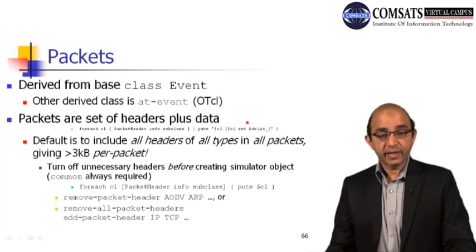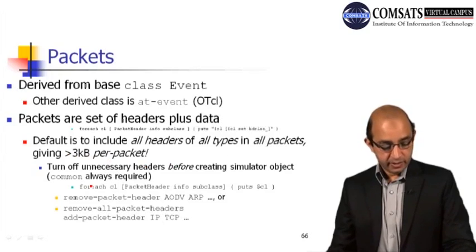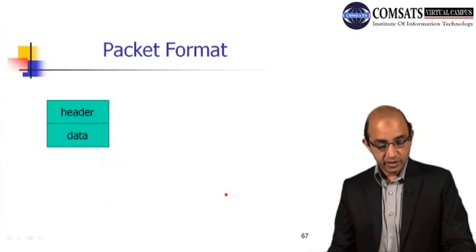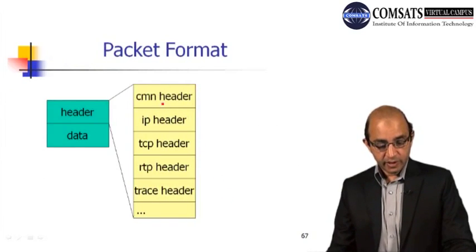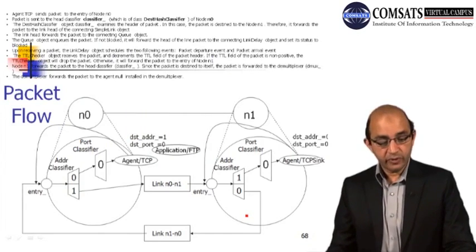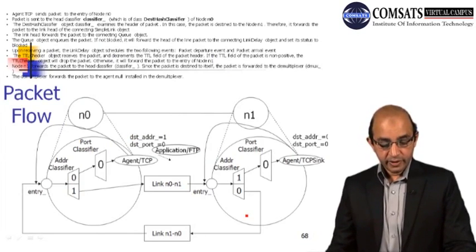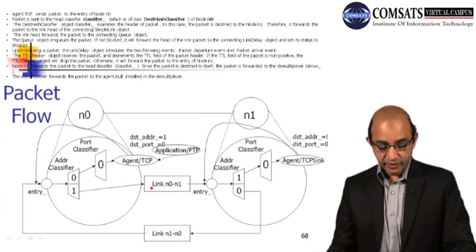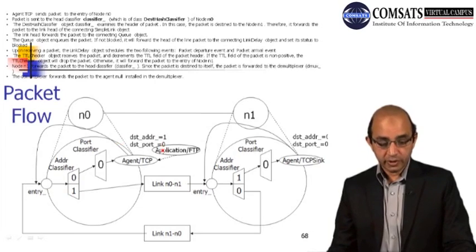A packet includes a set of headers plus data. The default is to include all headers of all types, at 3 KB per packet. If we don't want extra overhead, unnecessary headers can be turned off. The packet format includes: common header, IP header, TCP header, and so forth — with fields DS, packet type, ID, size, and IFACE. Packet flow: the application FTP is attached to a TCP agent, using address classifier and port classifier, with the link between N1 and N0 specifying destination address and destination port.